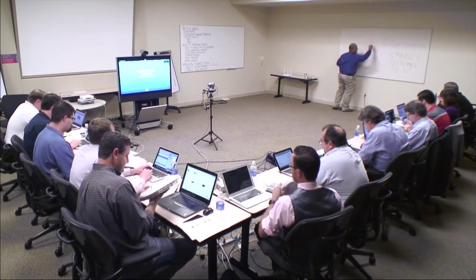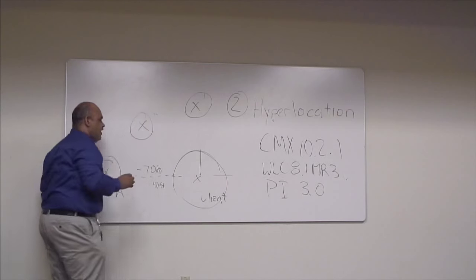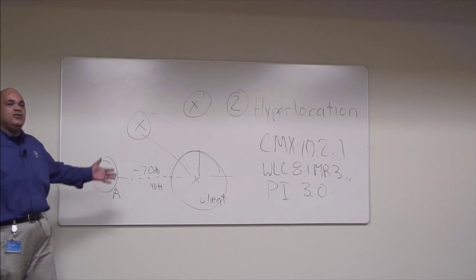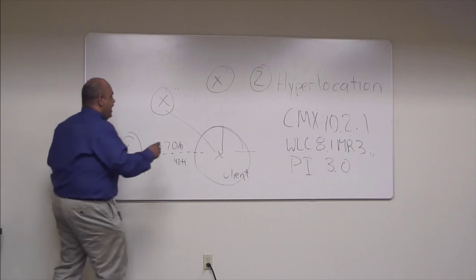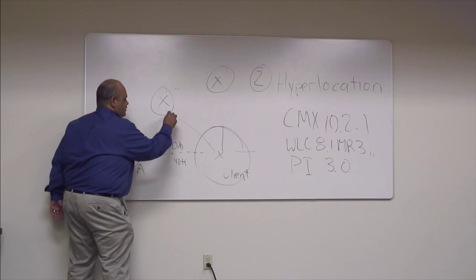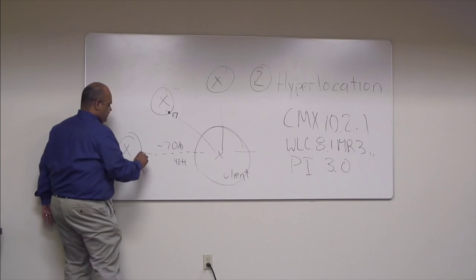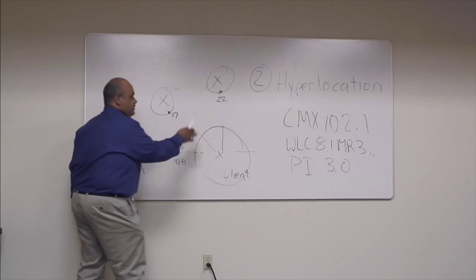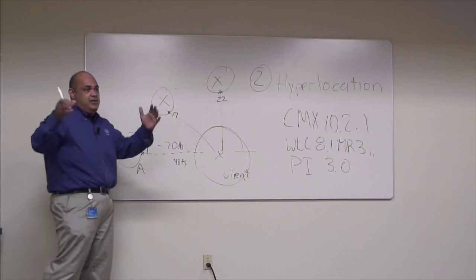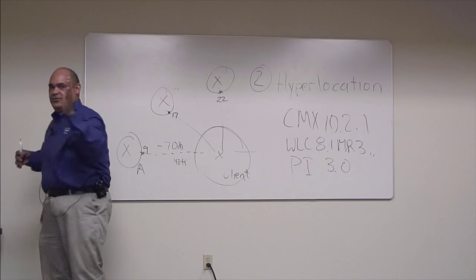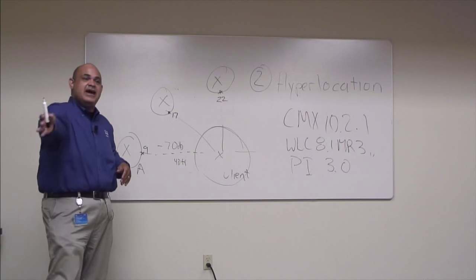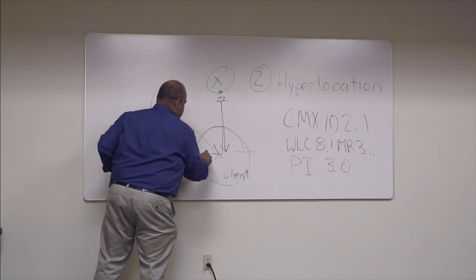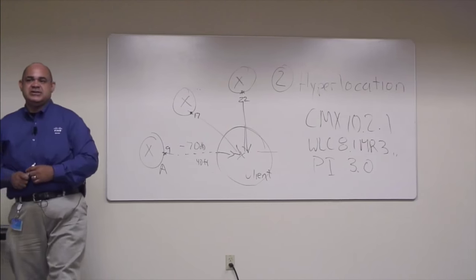It's similar to RSSI path loss, but instead of just saying this is seen at 70 dB, we provide what's called Eigen values that say: I believe it's seen by antenna 17 on this AP, antenna 9 here, antenna 22 here. That gives me particular angles from each antenna because I know which antenna is at 0 degrees, 90 degrees, 180 degrees. With three different directions from three APs, I can provide that location down to one-meter accuracy.